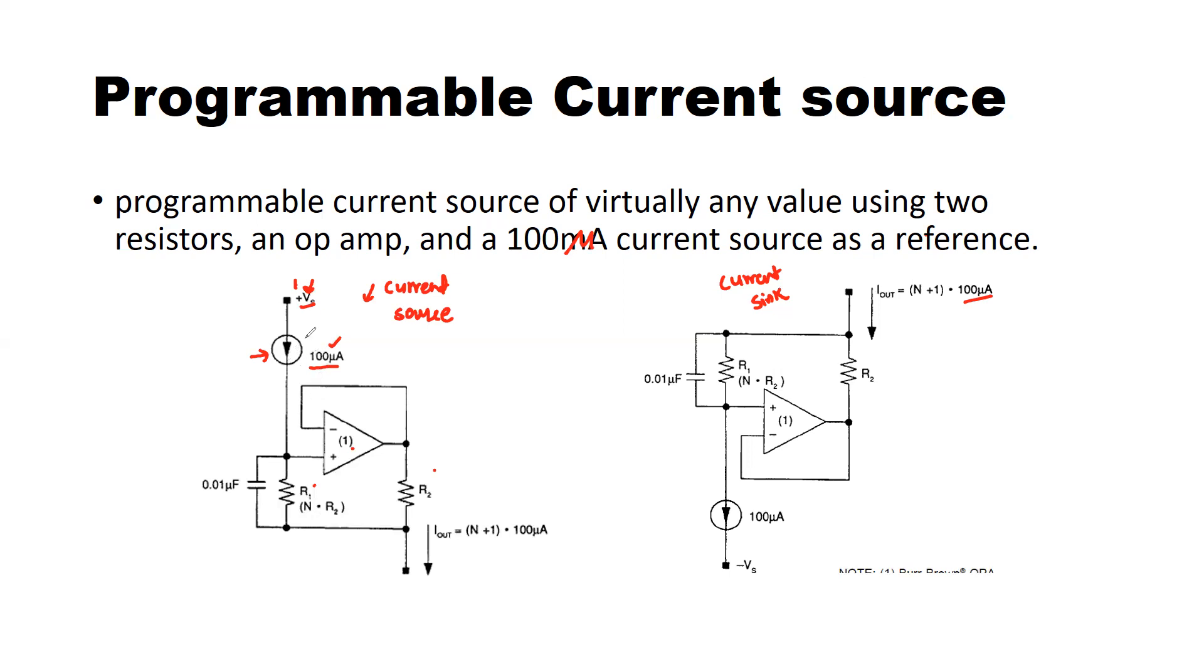This 100 microampere comes at this node generating a voltage drop across this resistor R1 which is chosen to be N times the resistance R2.